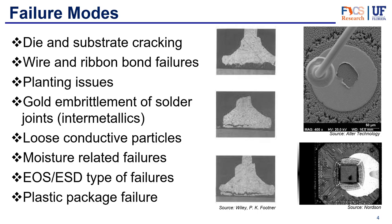You can also have EOS — electrical overstress — or ESD — electrostatic discharge — failures. These are very tricky because they're very hard to replicate. Electrostatic discharge can sometimes burn the chip, and it's hard to replicate because it's just a quick electric discharge, making it very difficult to recreate the same conditions. Finally, another failure type is plastic package failures — physical stress on the package causing it not to hold together.